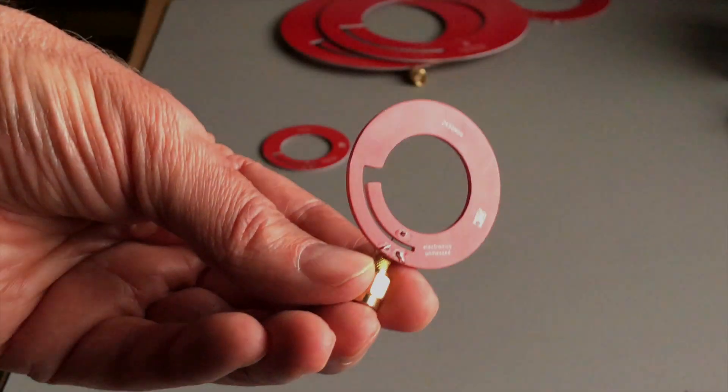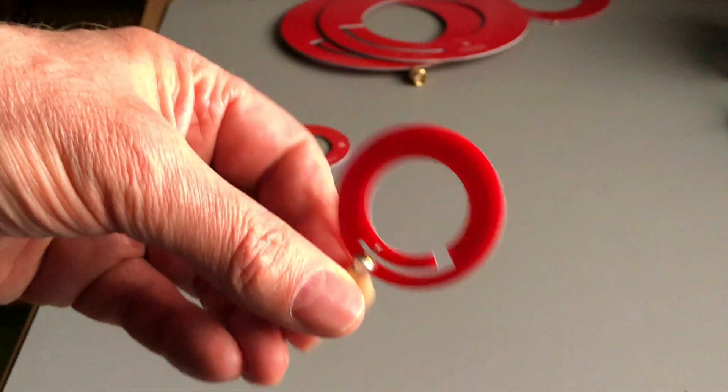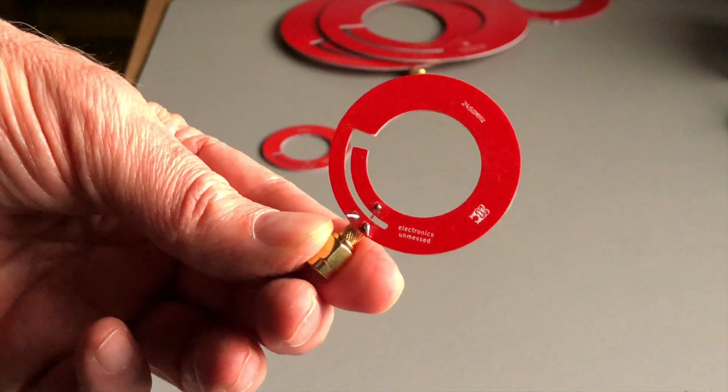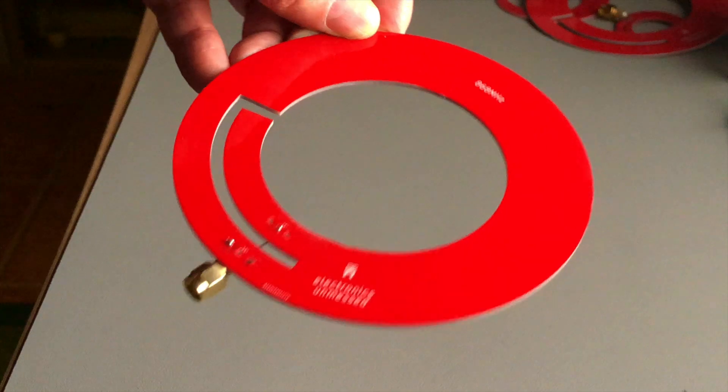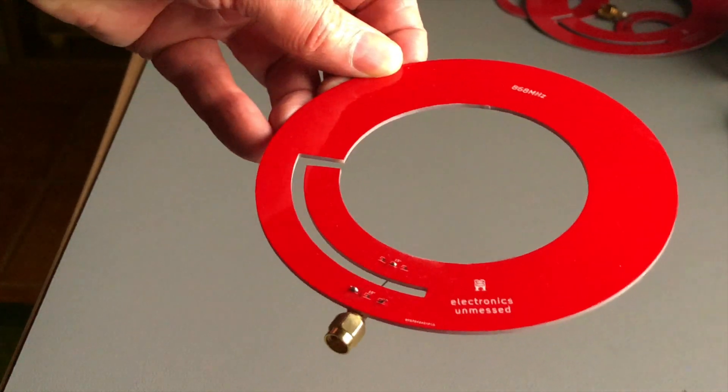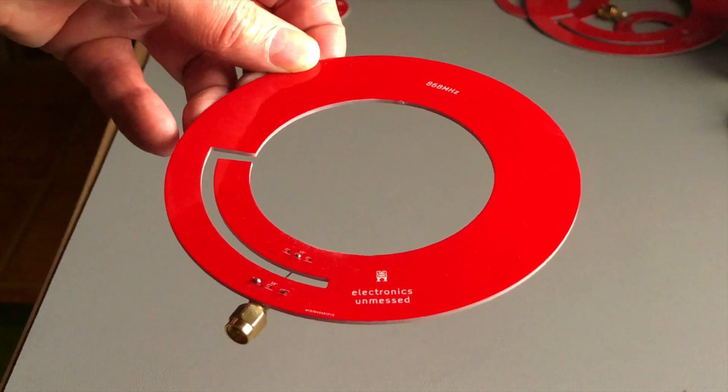I soldered an SMA connector to the connections corresponding to the 15.3 degrees feed angle computed. You can change the impedance matching via the other connectors if necessary. Let's see. Maybe we will construct a 3D printed mount for the antenna, that also fits a coaxial feed cable.